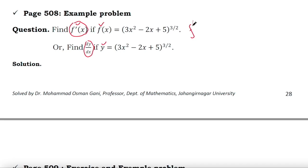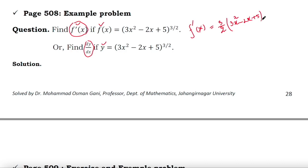Your f(x) is given, therefore f'(x) or the first derivative will be: the power becomes the coefficient, then the power decreases by 1. So we get (3x² - 2x + 5) to the power (3/2 - 1), multiplied by 2.